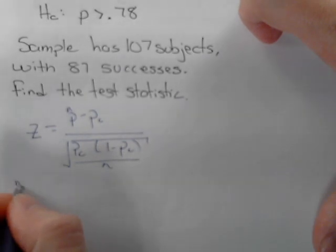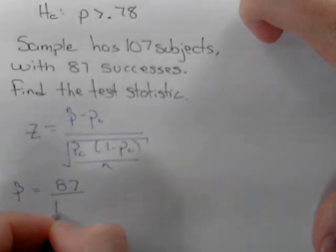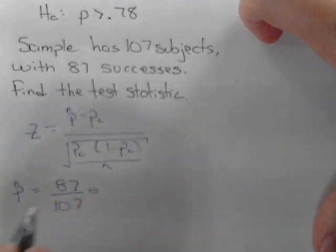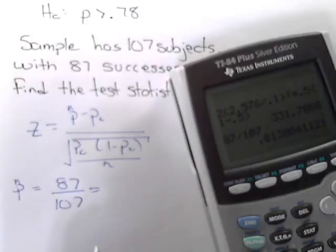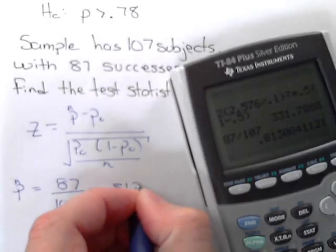P-hat in this case equals 87 successes out of 107 individuals, which rounded to four decimal places, 87 divided by 107 equals 0.8131.